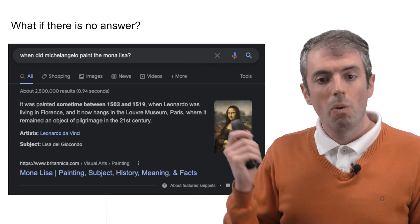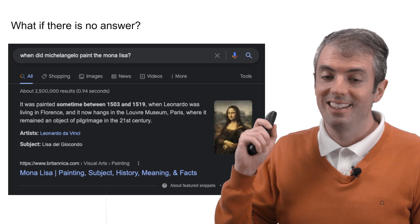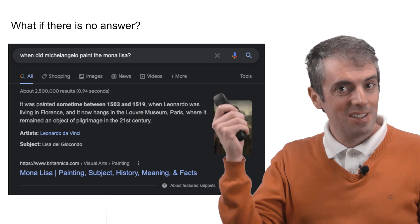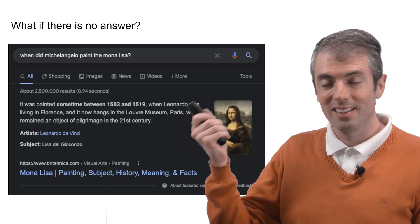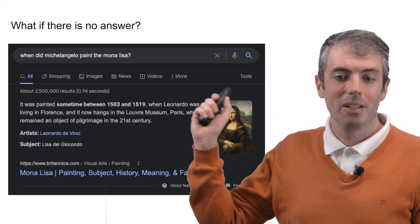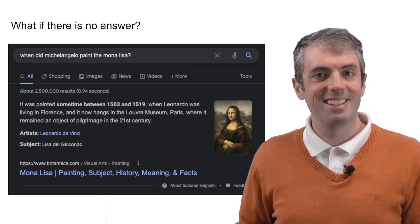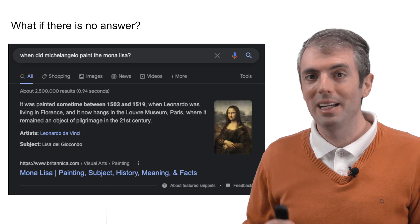For example, here, when did Michelangelo paint the Mona Lisa? And this answer is wrong. Leonardo da Vinci painted the Mona Lisa, but here it's very happy to tell you that it was painted between 1503 and 1519 and lets you continue thinking that it was painted by Michelangelo.